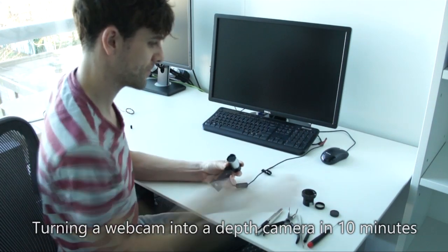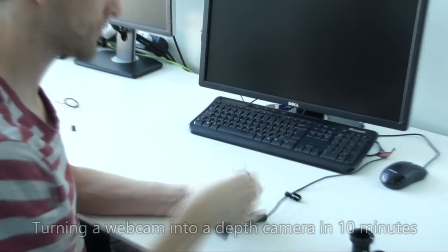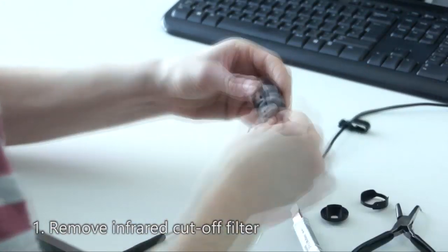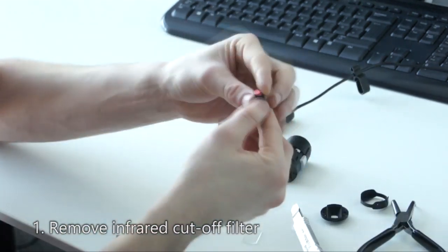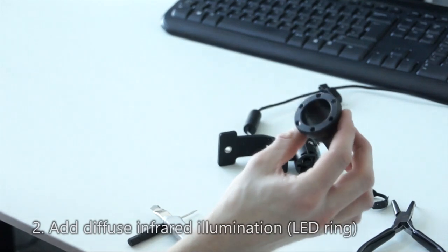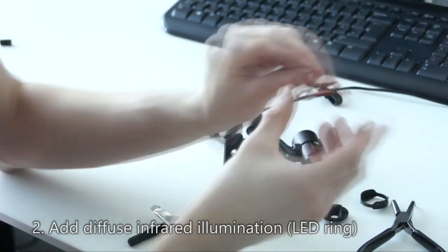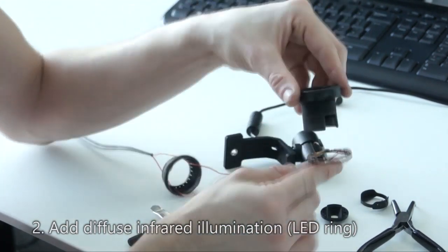Here we demonstrate that any web camera, such as the Microsoft LifeCam, can easily be turned into a depth sensor in less than 10 minutes. We first remove the infrared cutoff filter from the lens. We then add a ring of infrared LEDs that is attached to the camera with a 3D printed case.